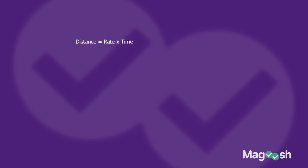We have: distance equals rate times time. We're going to put this to work with that very problem we just saw, but here's an easy way to remember it. D stands for distance, R for rate, and T for time — so we simplify that into D equals RT. That's going to be your magic formula. Always keep that in mind, but of course know what those variables stand for.